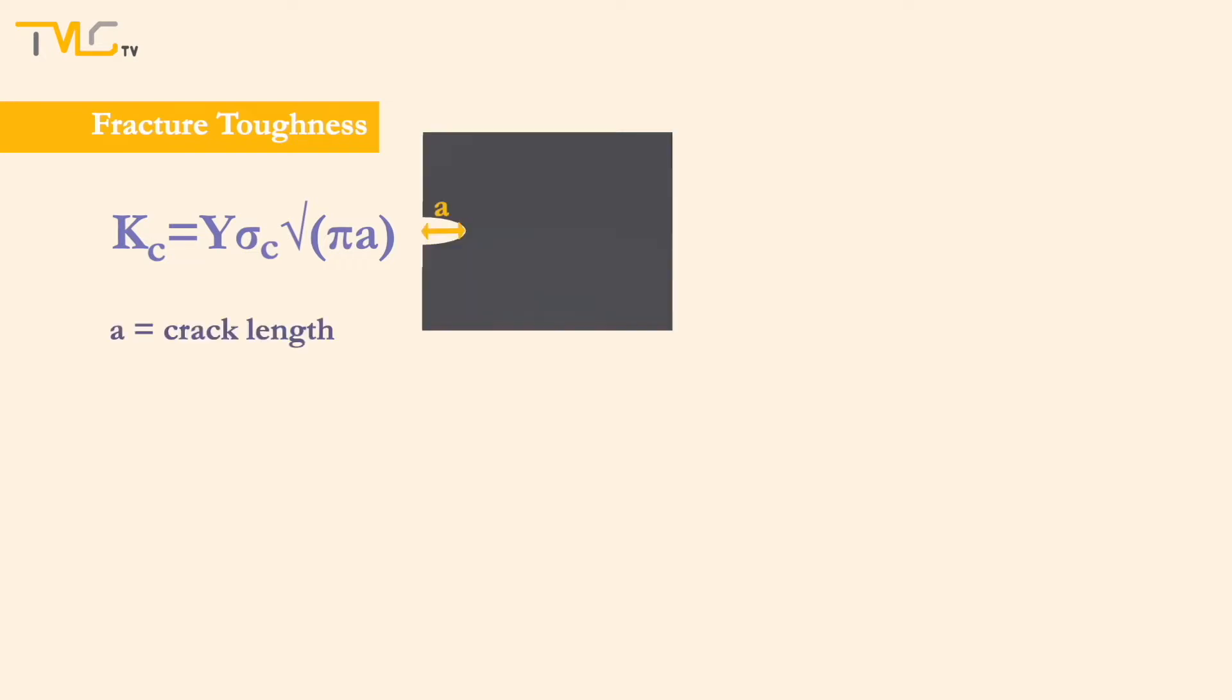In this formula, fracture toughness is proportional to the square root of crack length, which is denoted as a. Sigma c stands for the critical stress of crack propagation, and its equation is given on the screen.